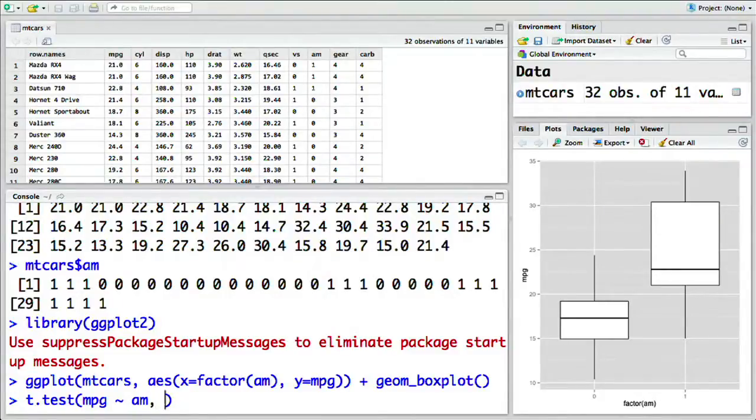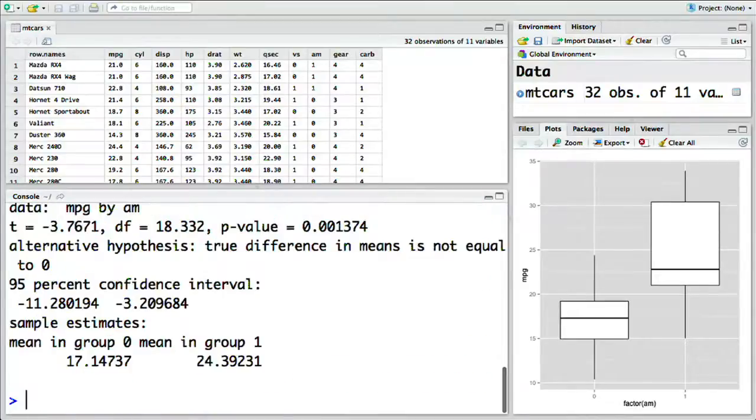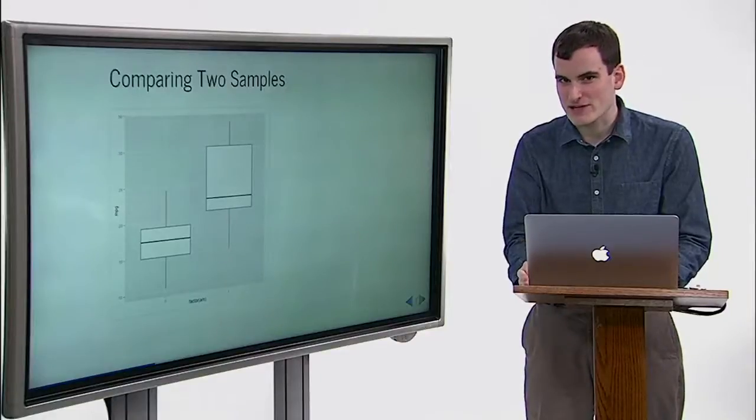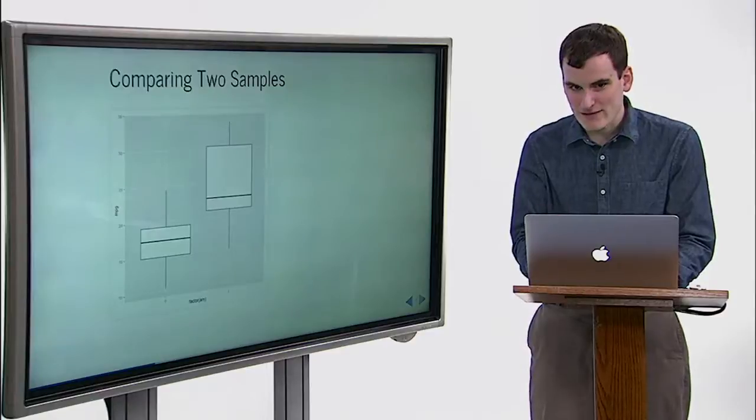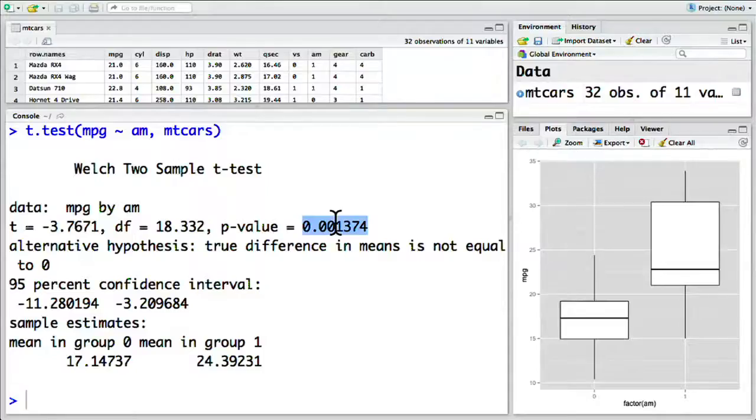Secondly, we give it the data that we're going to be plotting, and that's going to be MT cars. This is saying, does the miles per gallon depend on whether it's an automatic or manual transmission in the MT cars data set? We get a lot of information from the t-test. Most notably, we get a p-value. That's here. This shows the probability that the apparent difference between the two groups could occur by chance. This is a low p-value, so we can be fairly confident that there is an actual difference between the groups.